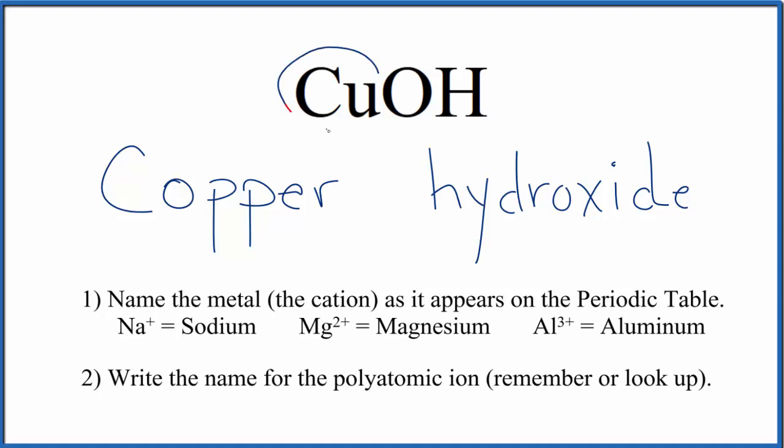But copper is a transition metal, and it has different charges depending on what it's bonded to. So what we need to do is figure out the charge on the copper and then write it here in the middle.